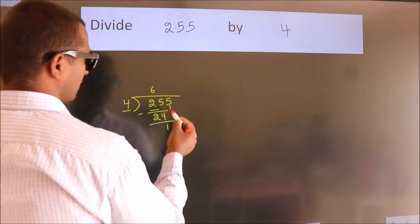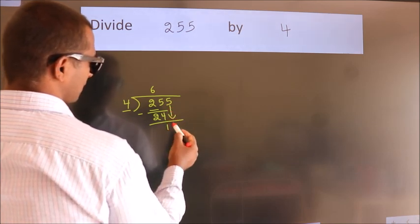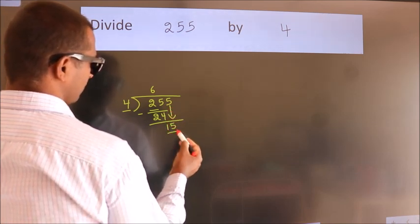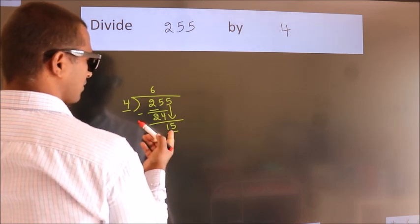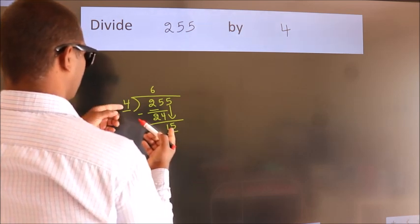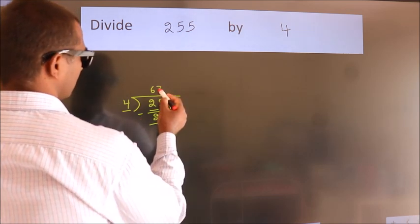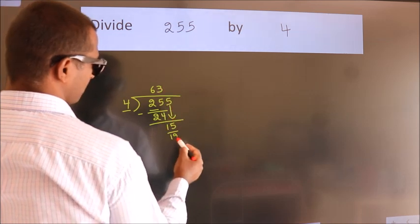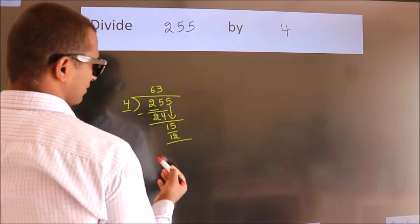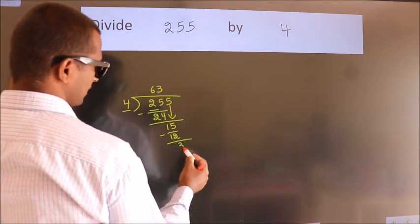After this, bring down the side number, so 5 down. So 15. A number close to 15 in the 4 table is 4 times 3 equals 12. Now we subtract. We get 3.